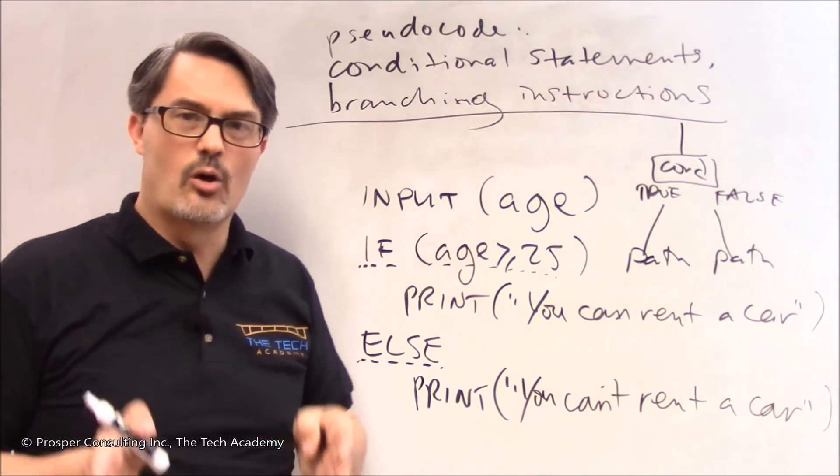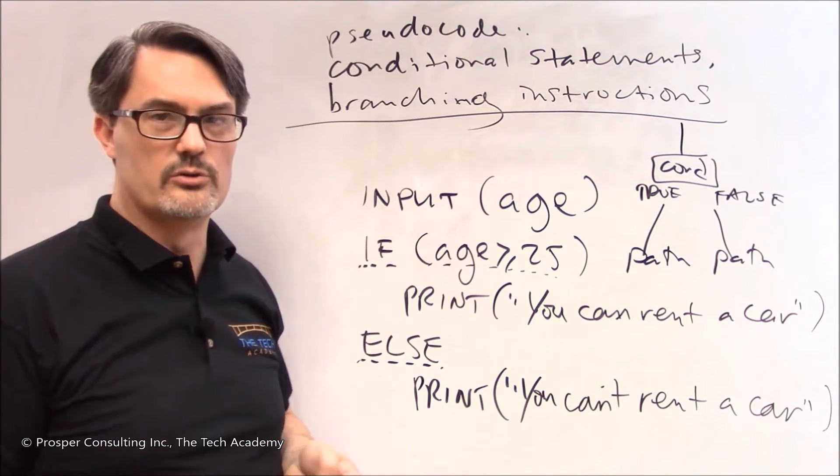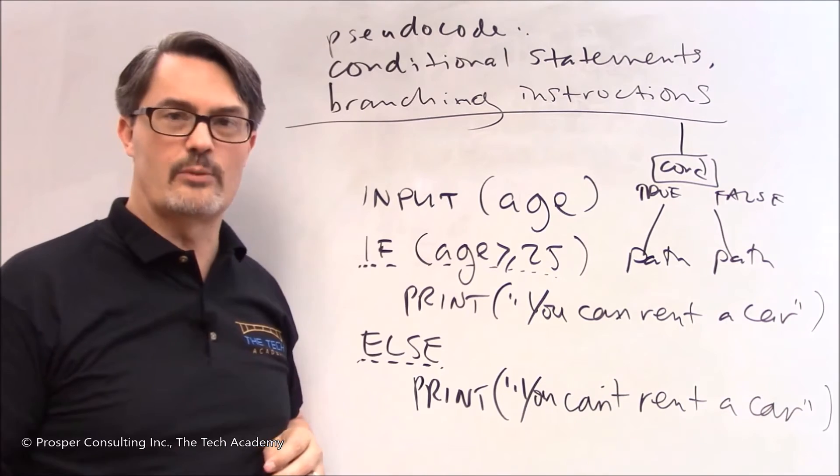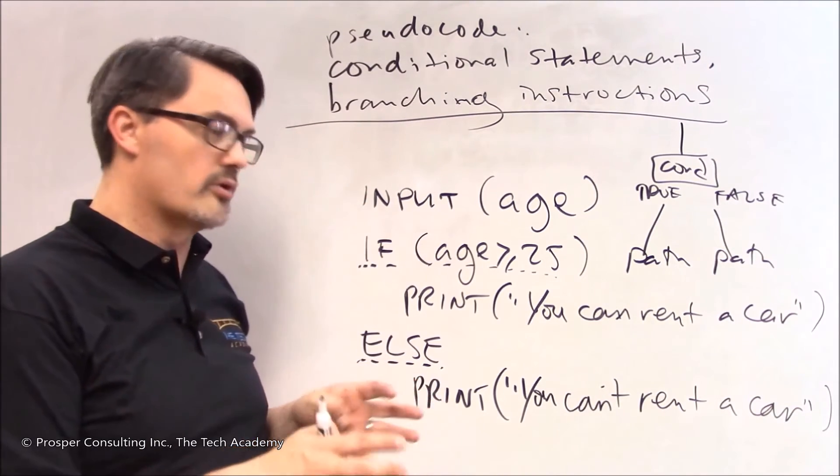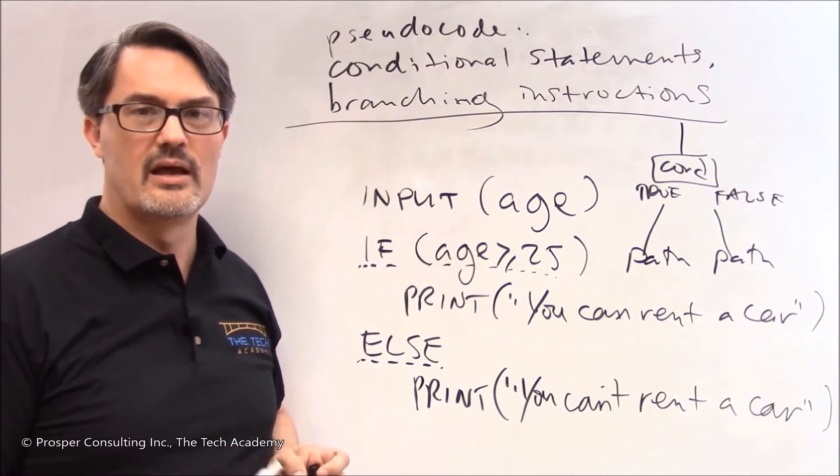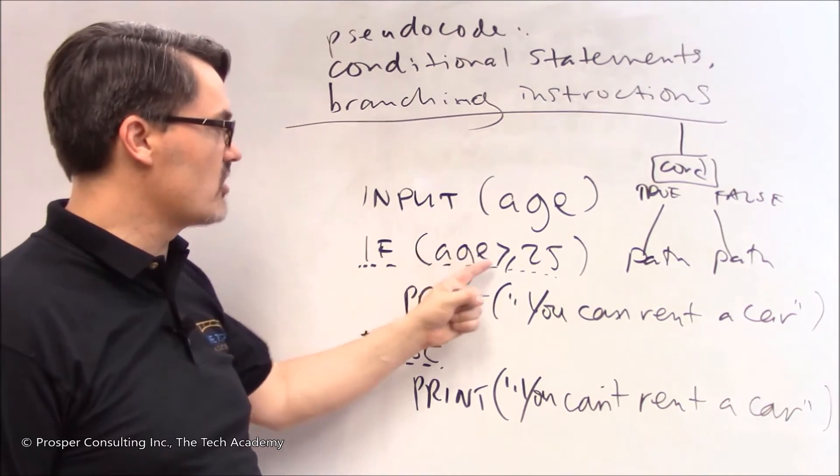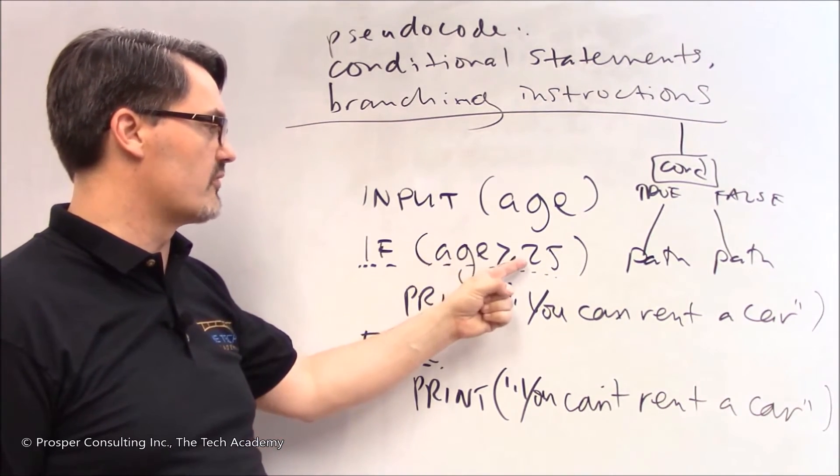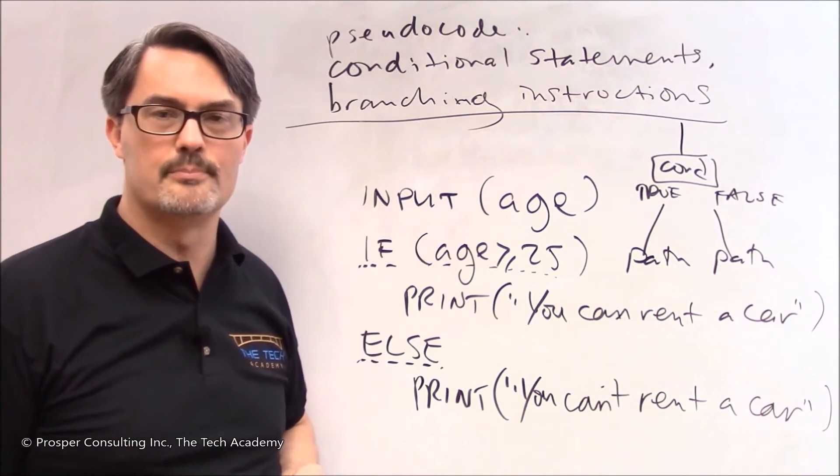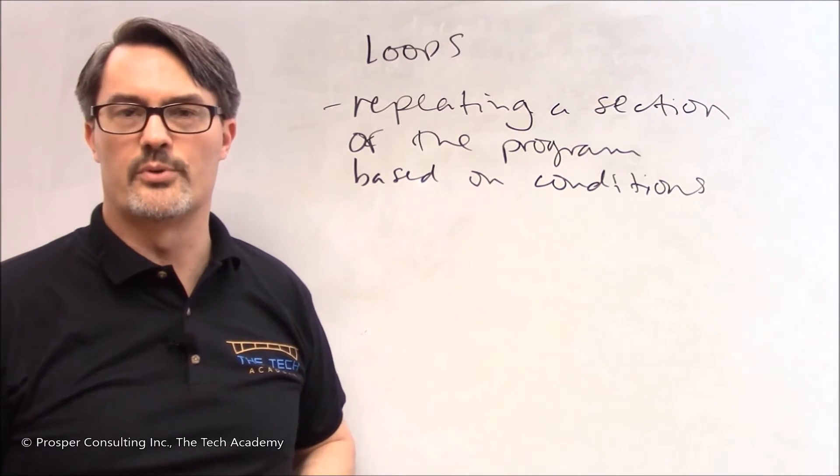And again this isn't 100% exactly like computer languages that you'll use. But it's extremely close. And you'll find that as you learn different languages, the syntax here, the arrangement of the words and symbols, will be very very much like what you see here. And again this is an example of using conditional statements and based on the evaluation of that statement whether it's true or false, branching to one or another path of execution within the program.